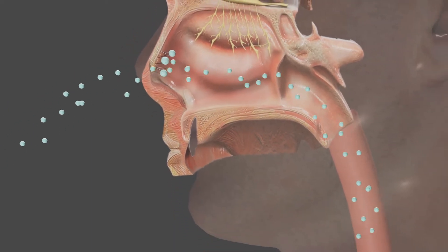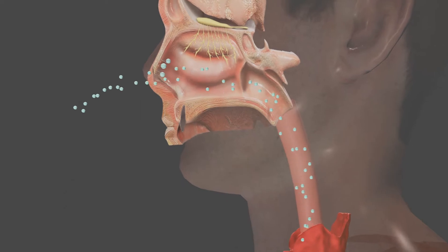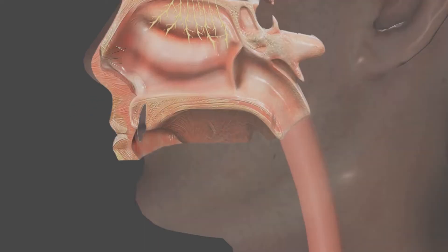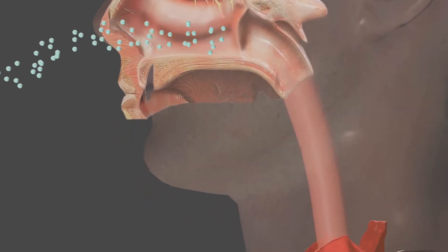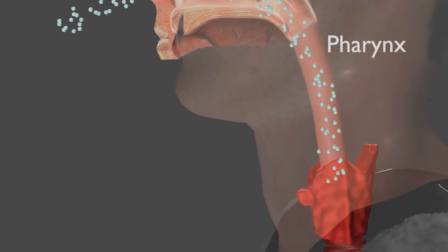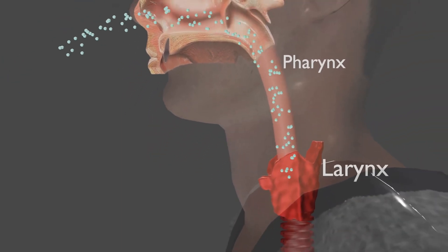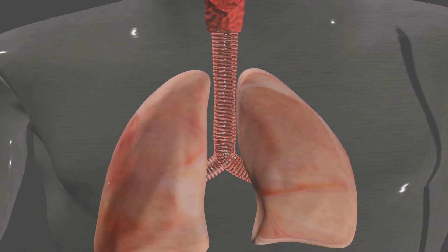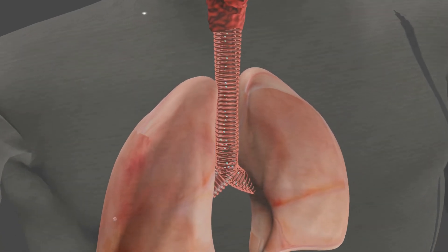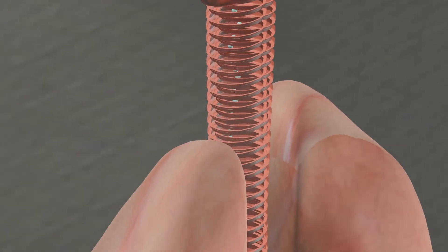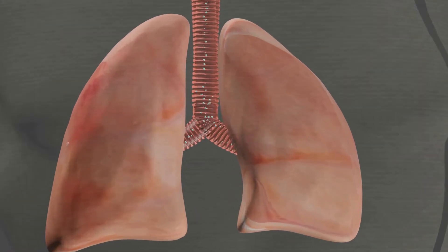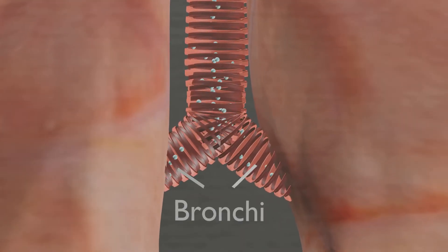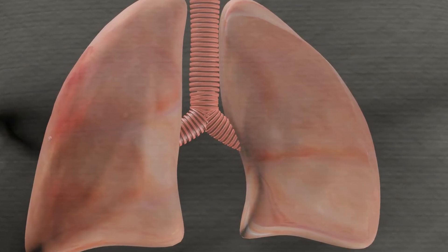Air quickly moves to the pharynx, from there it passes through the larynx or voice box. Air then enters the trachea — the windpipe — a tubular structure lying ventral to the esophagus, which extends to the chest cavity or thorax where it is divided into right and left bronchi.